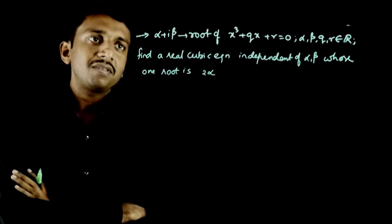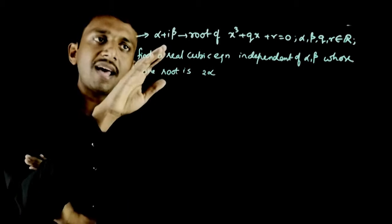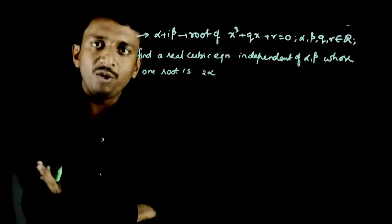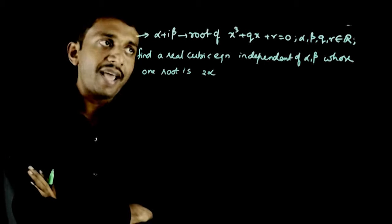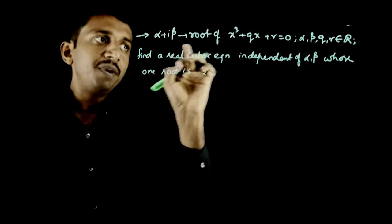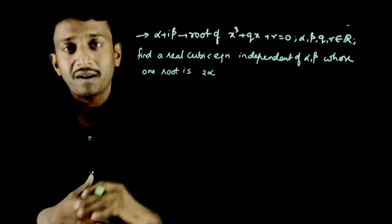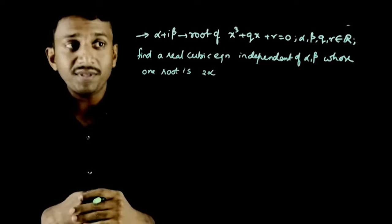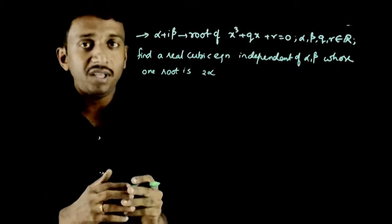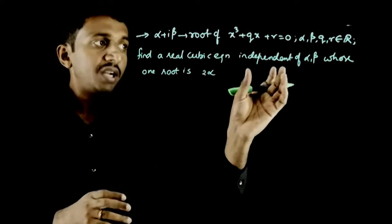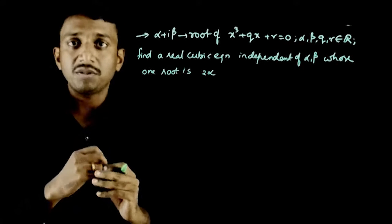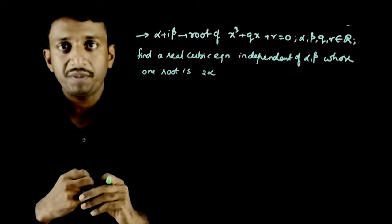Welcome students. This question: if alpha plus i*beta is a root of the cubic equation x³ + qx + r = 0, where alpha, beta, q and r are all real numbers, find a real cubic equation independent of alpha and beta whose one root is plus 2*alpha.